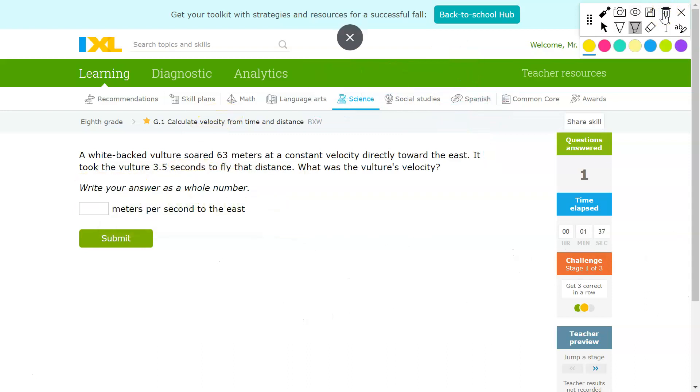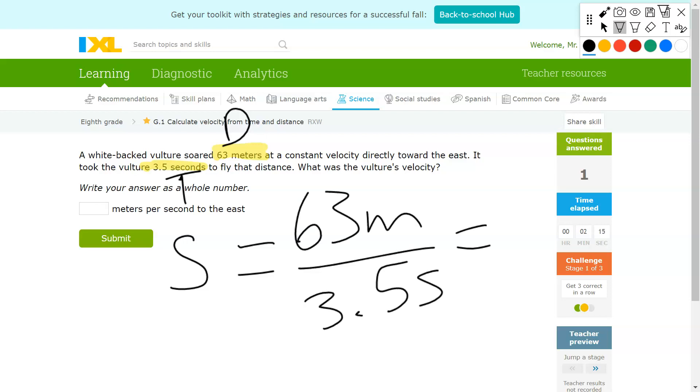Next question. Once again, we're looking for a couple of values. We've got 63 meters and 3.5 seconds. So the distance is D, which is 63 meters. Time is seconds, which is T. So speed equals 63 meters over 3.5 seconds, which equals 18 meters per second. We'll put that answer in right there.